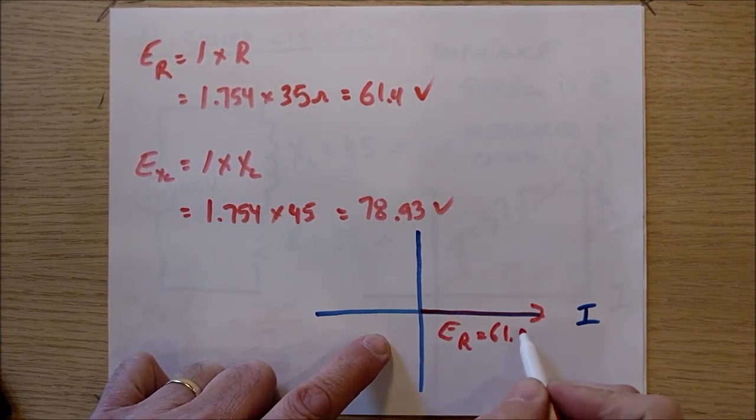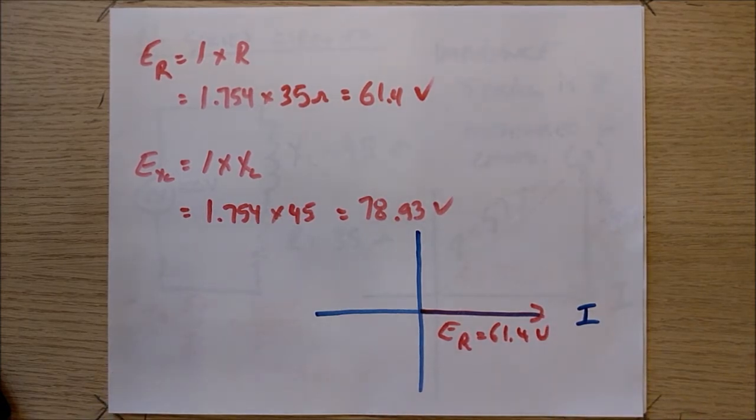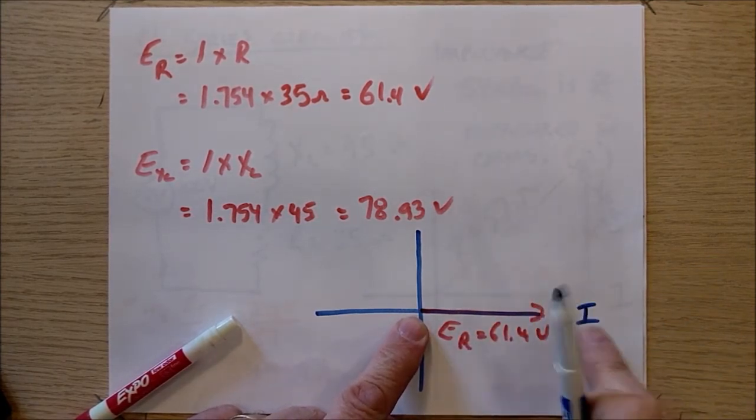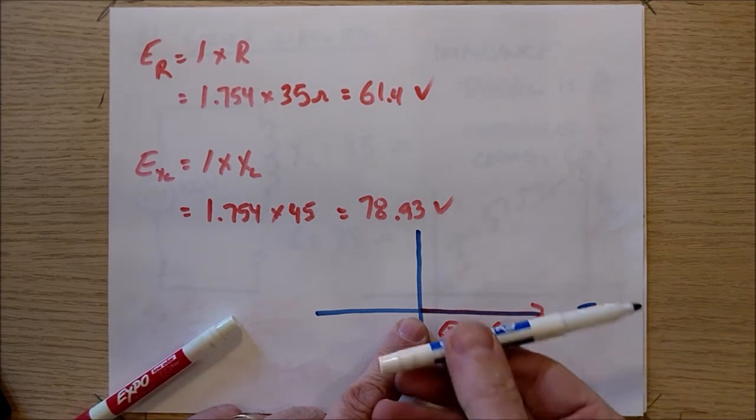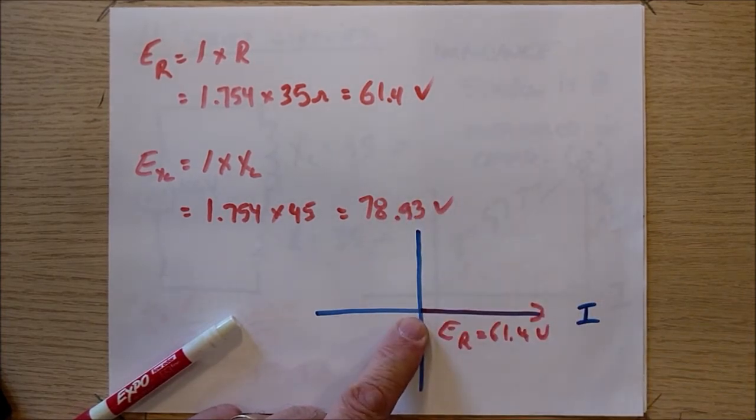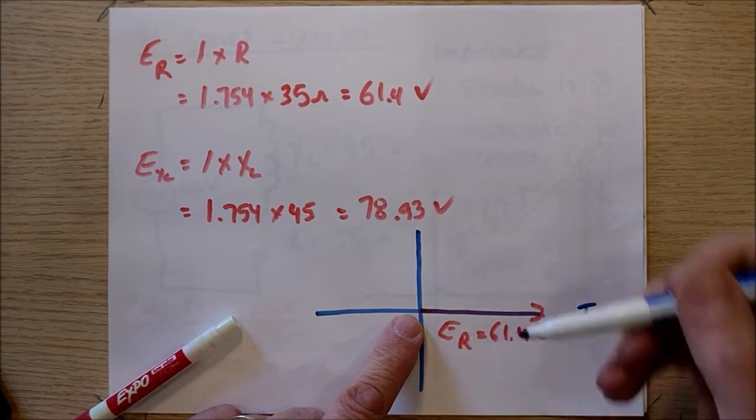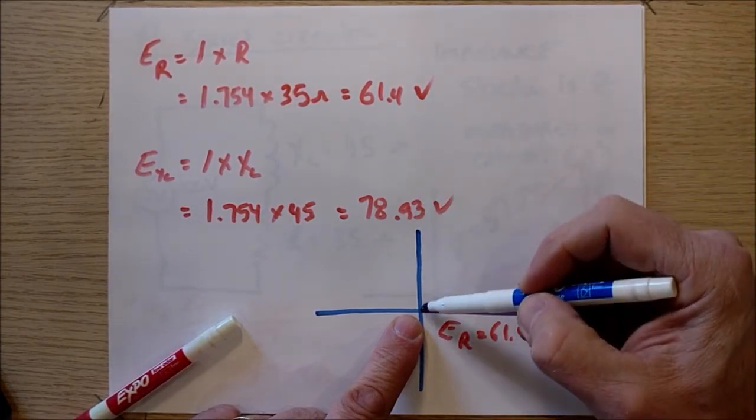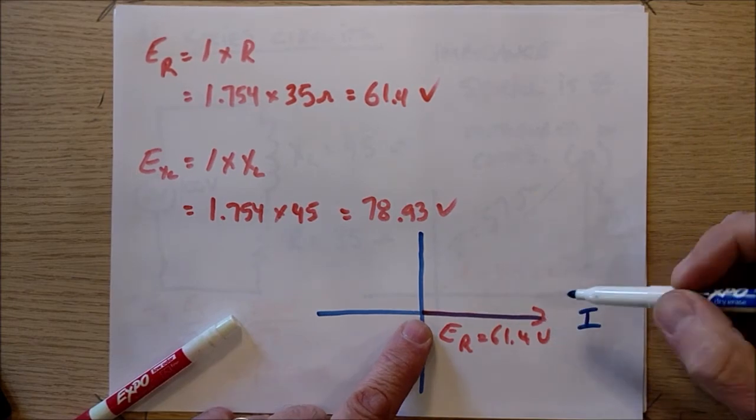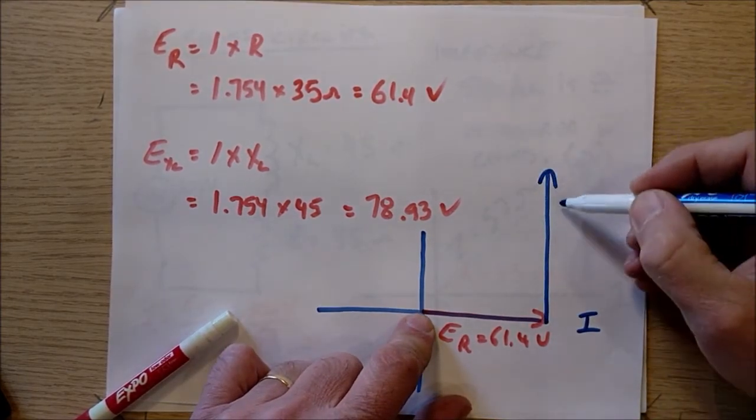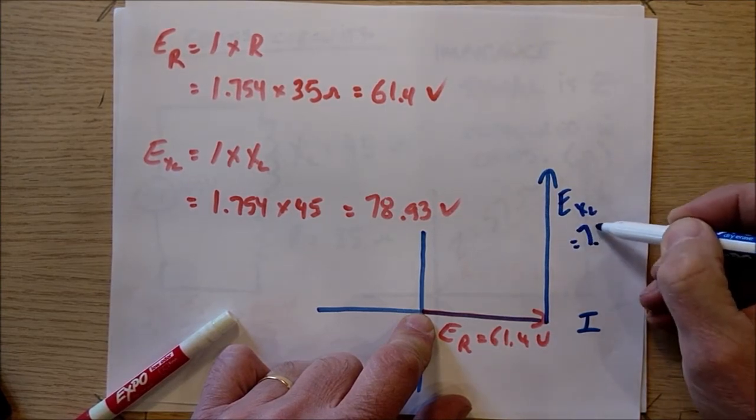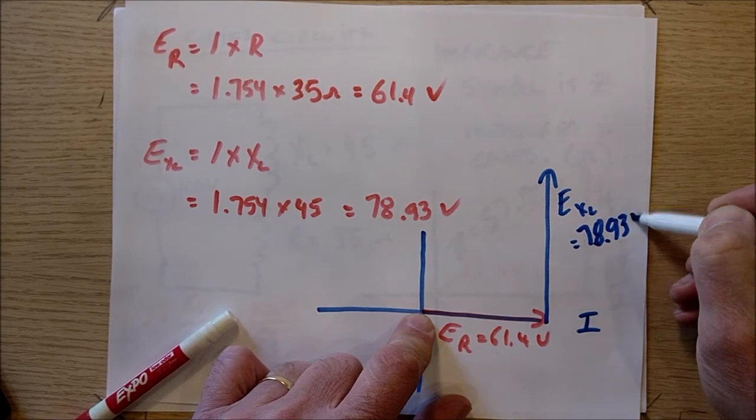And EXL, which is 78.93 volts, that voltage, since it causes the current to lag by 90, that voltage is leading by 90. And leading phasors are counterclockwise. And so if I were to draw that phasor, it would sit right here. Now I'm going to move it tip to tail, which means it sits right here. There's EXL. It is equal to 78.93 volts.